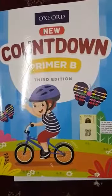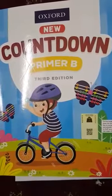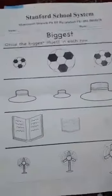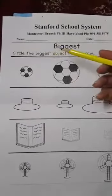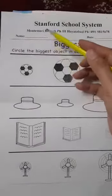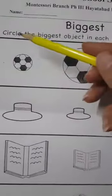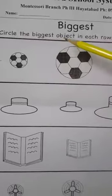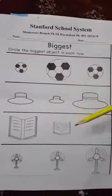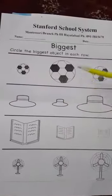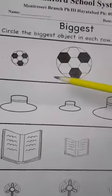Bismillahirrahmanirrahim. Assalamualaikum students, welcome back to lesson 30 from our math subject. Today we will do a worksheet. Before starting, do not forget to mention your name and date here. Circle the biggest object in each row. In each row different objects are given and we will circle the biggest one, so let's start.